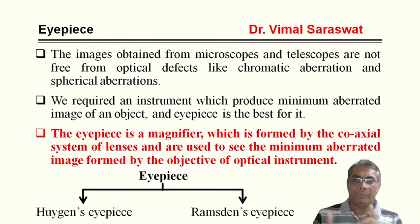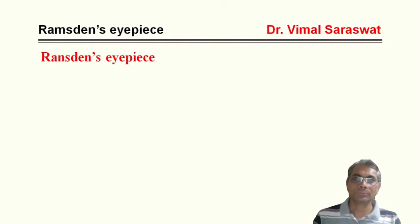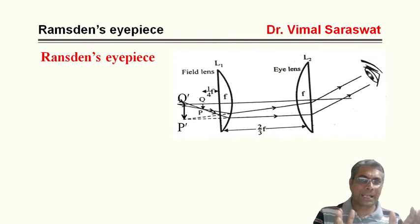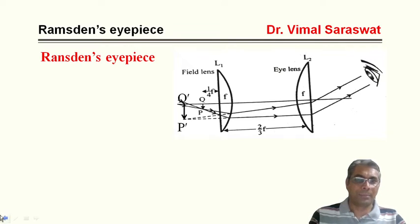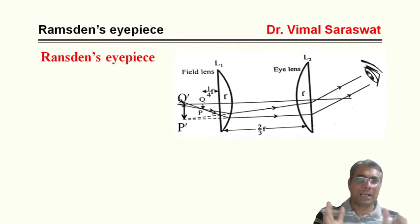In our last lecture we discussed about Huygens eyepiece in detail, so here we will discuss only about Ramsden eyepiece. This is the ray diagram of Ramsden eyepiece. It has two lenses L1 and L2: L1 is the field lens whereas L2 is the eye lens. The focal length of both lenses is the same, that is f, and the convex surfaces of both lenses face each other. The distance between the two lenses is 2/3 f.